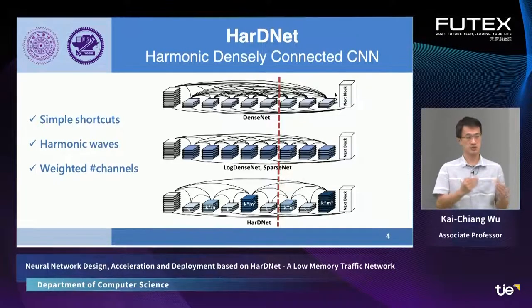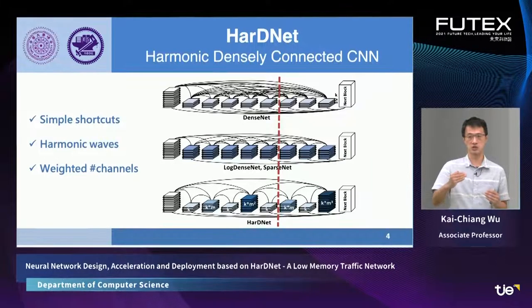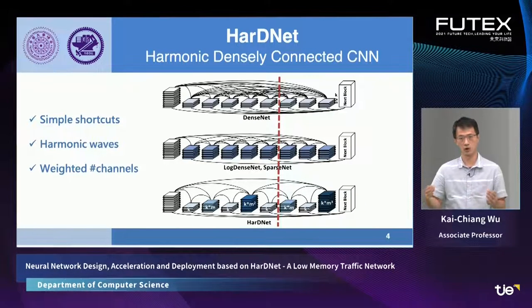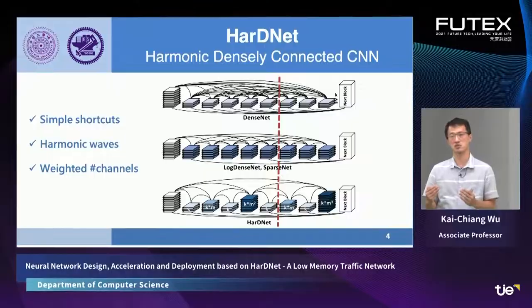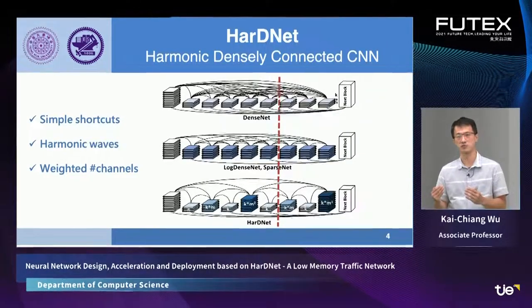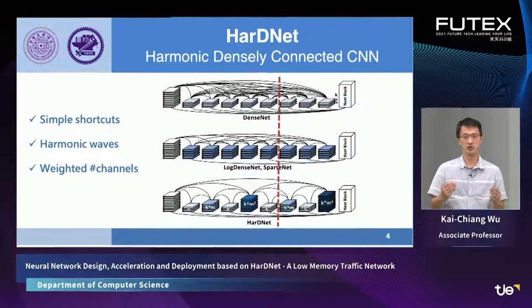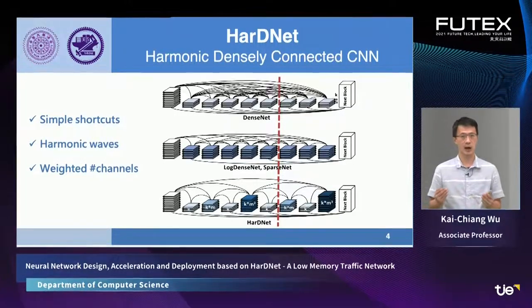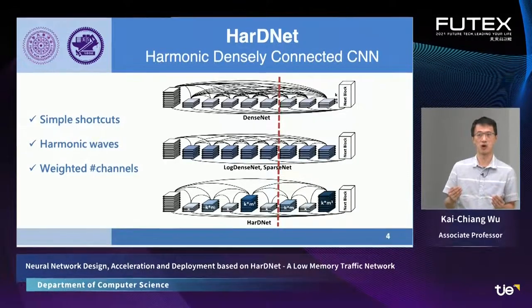The second property of our HardNet is that we have Harmonic Waves. As you can see in the bottom-most figure of our architecture, we have Harmonic Waves such that the overall memory profile can be optimized. Depending on simple shortcuts and Harmonic Waves, we decide a weighted number of channels from block to block such that the resulting memory traffic can be optimized. These are a list of properties for our proposed HardNet.